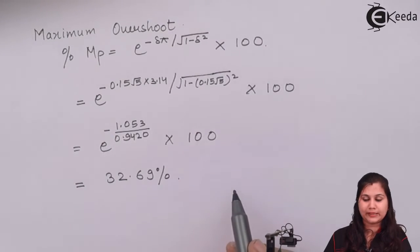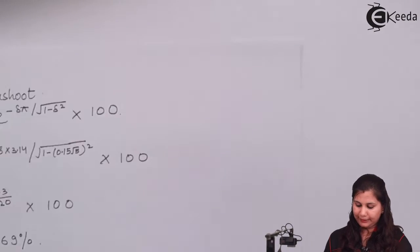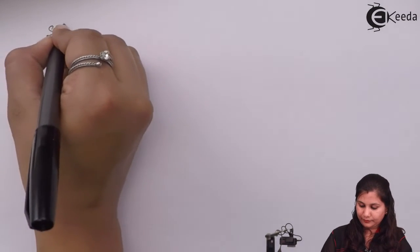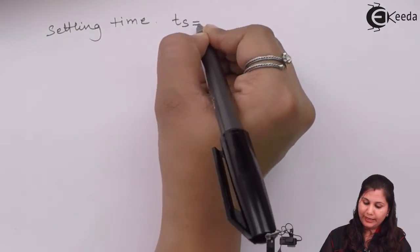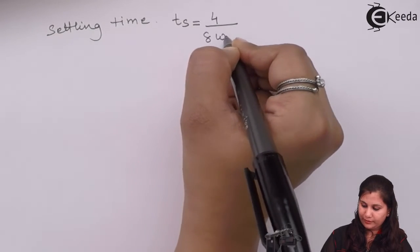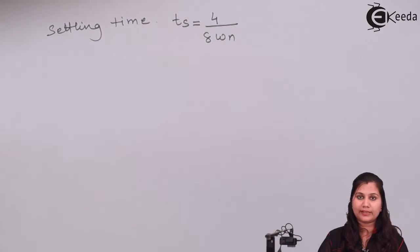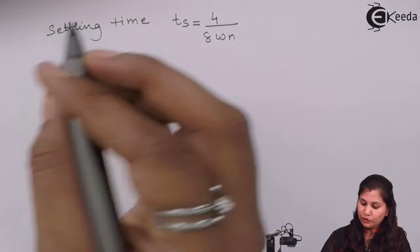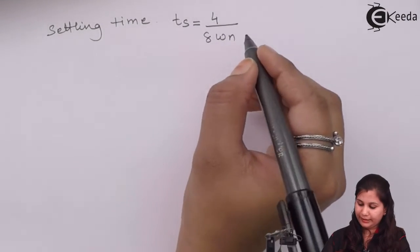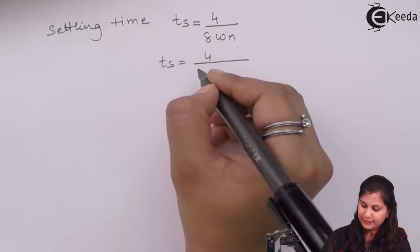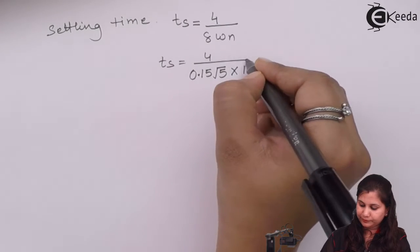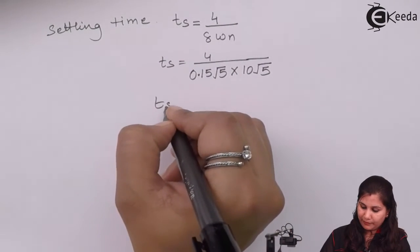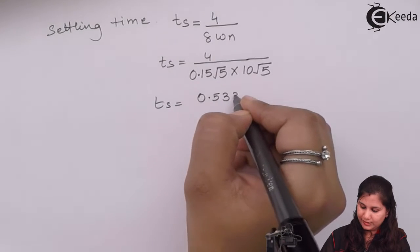The next specification is settling time, represented by ts, given by the formula 4 / (δωn) for the 2% tolerance band. So ts = 4 / (0.15√5 × 10√5), and the settling time comes out to be 0.533 seconds.